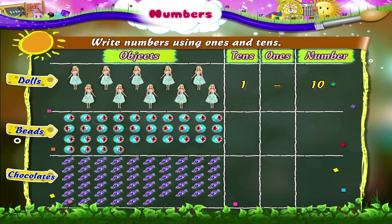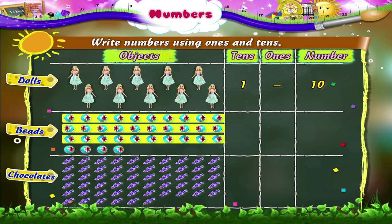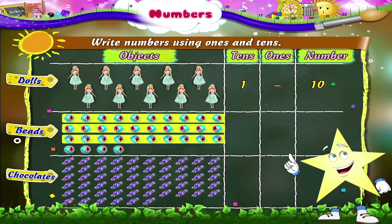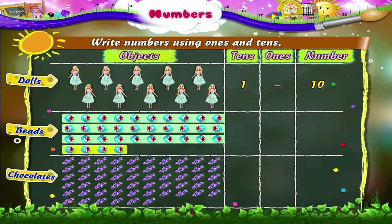Now look at the group of beads kept here. How many groups of 10 beads are there? There are 3 groups of 10 beads. Are there more beads, Starry? Yes, there are 4 extra beads. So 3 groups of 10 beads make 3 10s, and 4 extra beads are written as 4 1s. 3 10s and 4 1s make the number 34.